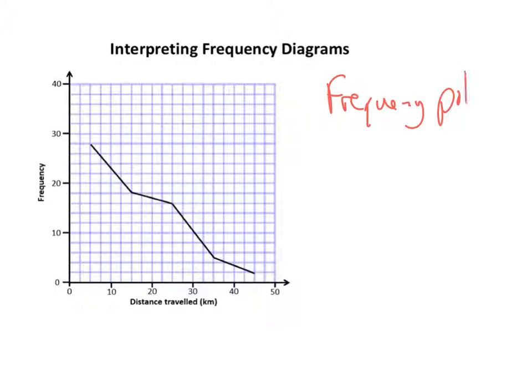All right, so polygon. Now each point is plotted in the middle of a group, so they're the points that have been plotted and they're just joined up with straight lines.